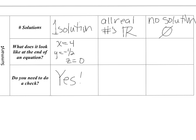What if solving an equation gives you all real numbers? That means your variable is completely cancelled out and you're left with a true statement like 3 equals 3, negative 2 equals negative 2, 0 equals 0, or 2/3 equals 2/3. Your solution is all real numbers. Do you have to check it? Yes — just pick any number, plug it into the equation, and it should work.